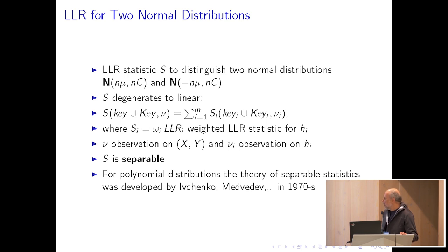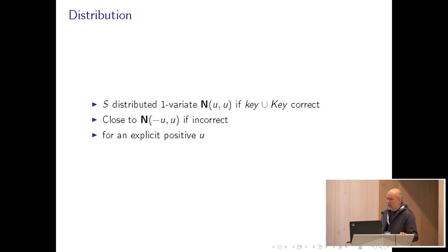Such statistics are called separable and the theory of such statistics was developed by Russian mathematicians Ivchenko and Medvedev quite long ago. We use here only the notion of the statistic and not the full theory. Since we know the distributions of everything, we can compute the distribution of our main statistic. It is a weighted normal distribution with expectation u and variance u for some explicit positive u if the key is correct, and something opposite if the key is incorrect.